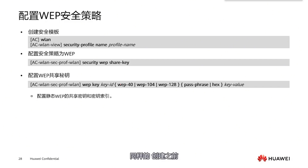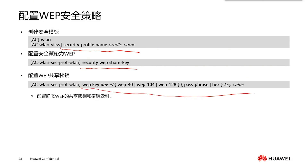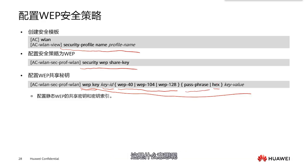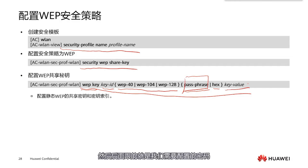Similarly, before creating, we first establish a security template, then our security policy is WEP shared key. After configuring the shared key, we need to set some parameters. First is the WEP key parameter, then the sequence number of the key, the authentication methods, and then passphrase and hex. Passphrase refers to the key phrase, which is what we call the password, while hex means hexadecimal. We usually choose the passphrase option, then set the password. This is the shared key security policy, WEP.